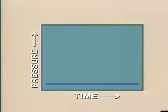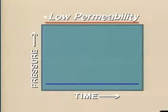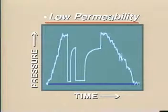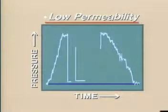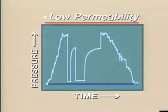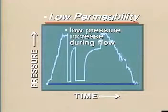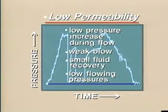It is possible to state the relative level of formation permeability within the region of the wellbore being tested. Charts from low permeability formations, as we see here, produce build-up curves that suggest the pressure is beginning to stabilize. This is often referred to as pressure starting around the curve. These formations have very low pressure increases, if any, during the flow periods. There will be a weak blow at the surface, small fluid recovery, and fairly low flowing pressures.